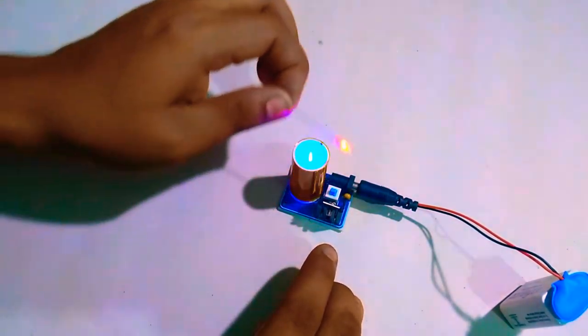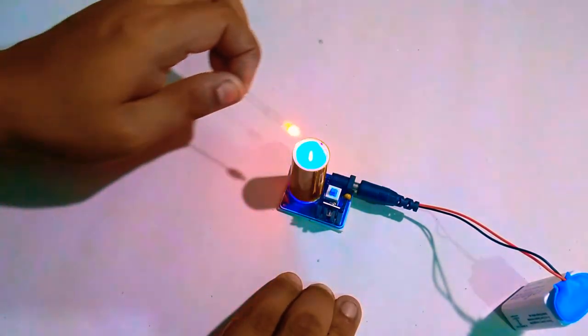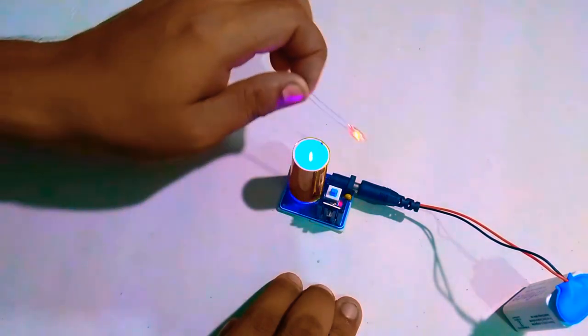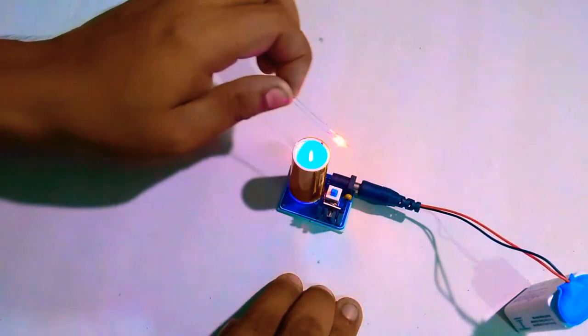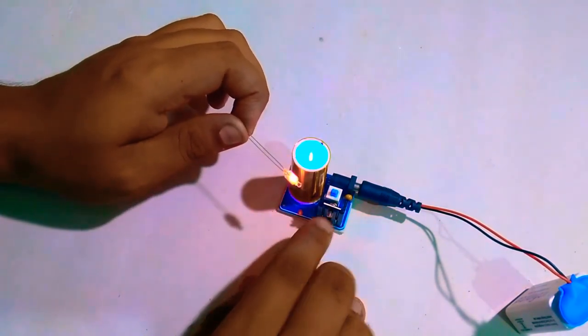But if you run it for a long time the MOSFET gets pretty hot, so this is not for continuous use. Use it for 5 to 10 minutes then turn it off otherwise the MOSFET will burn.